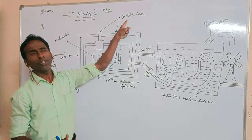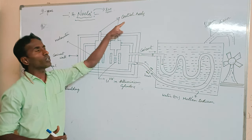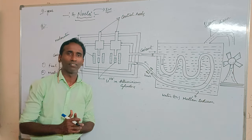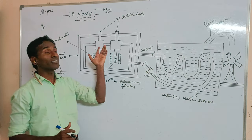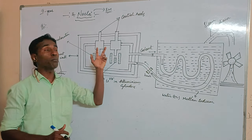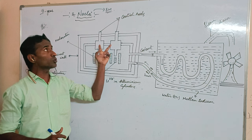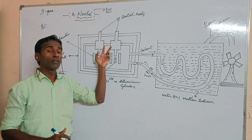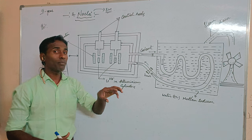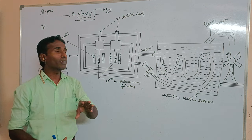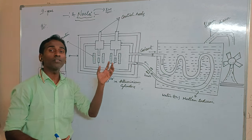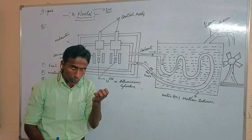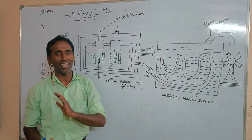The control rods are made of cadmium and boron. These control rods, made of cadmium and boron, absorb neutrons to control the chain reaction.